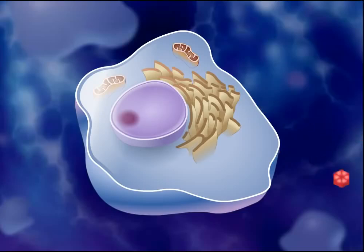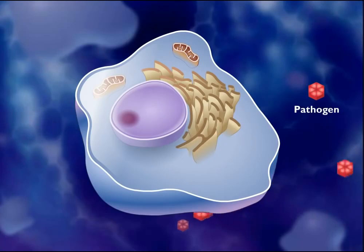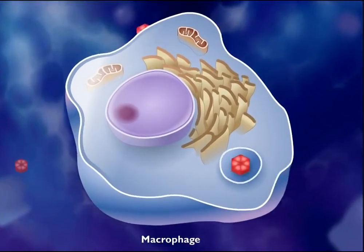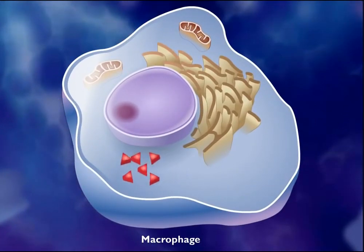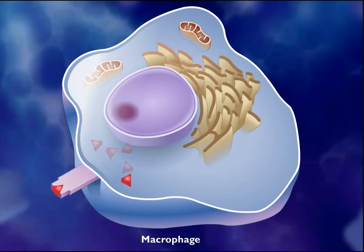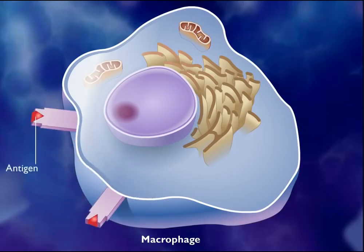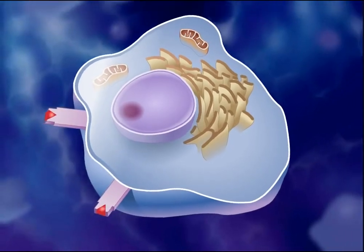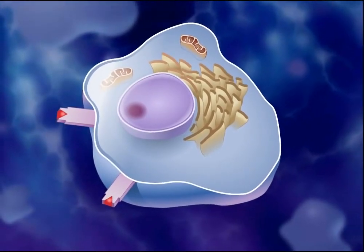Activation of the immune response typically begins when a pathogen enters the body. Macrophages that encounter the pathogen ingest, process, and display the antigen fragments on their cell surfaces. Macrophages with antigen fragments displayed on their surfaces are called antigen-presenting cells.